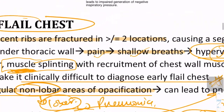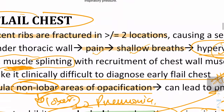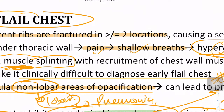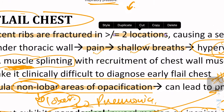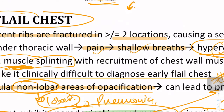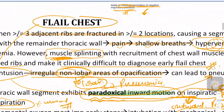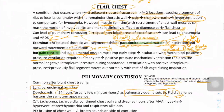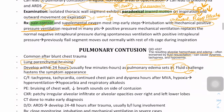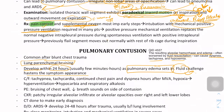In flail chest, during normal respiration there is generation of negative inspiratory pressure which facilitates inspiration. But in flail chest there is impaired generation of negative inspiratory pressure. Therefore, mechanical positive pressure ventilation is useful in this condition because it allows the rib cage to move out normally.